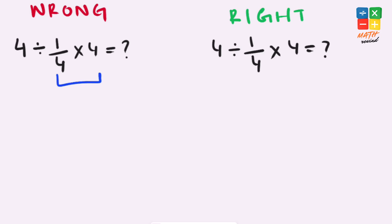First we solve this part of the expression: 4 and 4 cancels out, each other leaves us with 1. 4 divided by 1 equals 4, but this answer is not right because according to the order of operations we must...